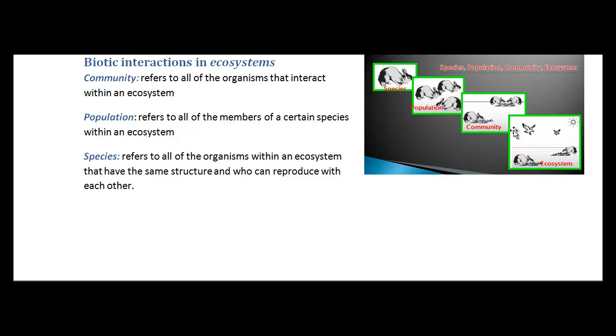The population refers to all of the members of a certain species within an ecosystem. So you might be talking about a population of rabbits or birds or ants. And then a species refers to all of the organisms within an ecosystem that have the same structure who can reproduce with each other. So the species in this case would be rabbit.